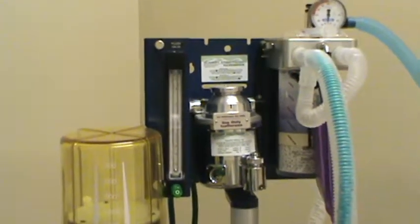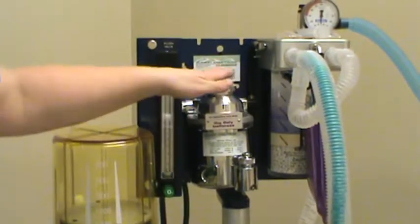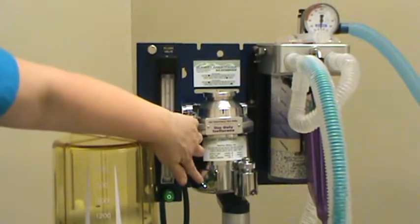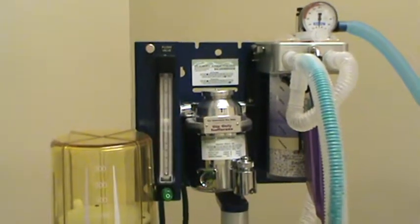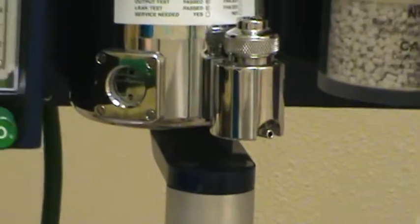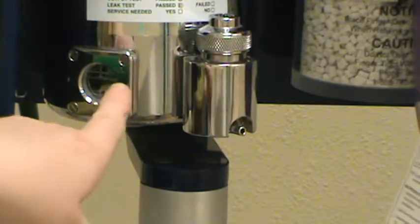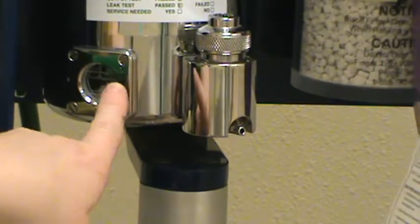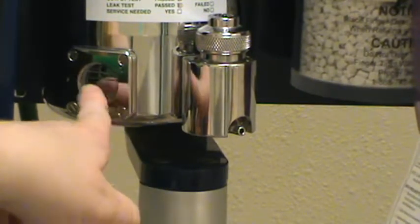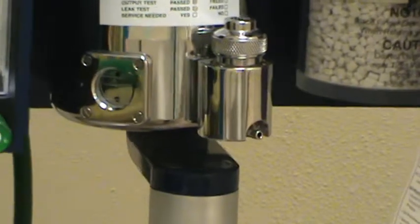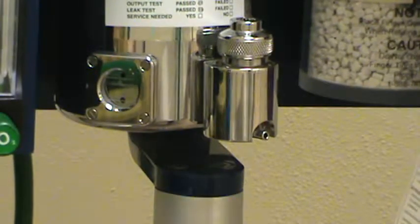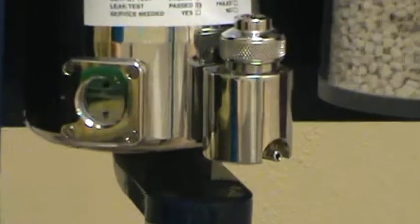Second thing we're going to do is verify that our vaporizer has enough gas anesthetic in it. I'm going to show you here. This is the level right here where our gas anesthetic is. It has a little more than half full, so we have plenty of gas anesthetic in our machine.